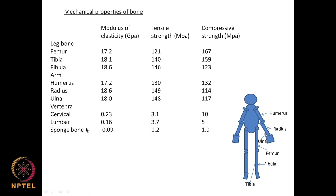The values change quite dramatically: for regular bones we are talking tensile strength in the range of 120 to 150 megapascal, whereas for vertebra it is in the range of 1 to 3 megapascal — almost 100 times less.